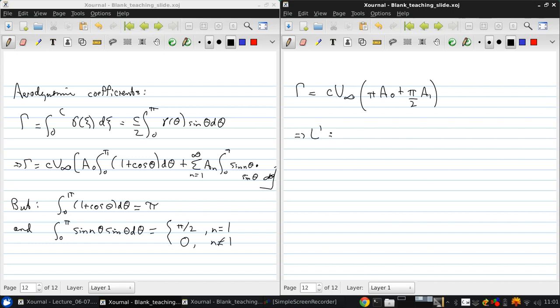So then the lift per unit span is of course from the Kutta-Joukowsky theorem, rho infinity v infinity gamma. So that's rho infinity v infinity squared c pi a0 plus pi over 2 a1. And the lift coefficient, which is l prime over 1 half rho infinity v infinity squared c times 1, is just pi 2 a0 plus a1.